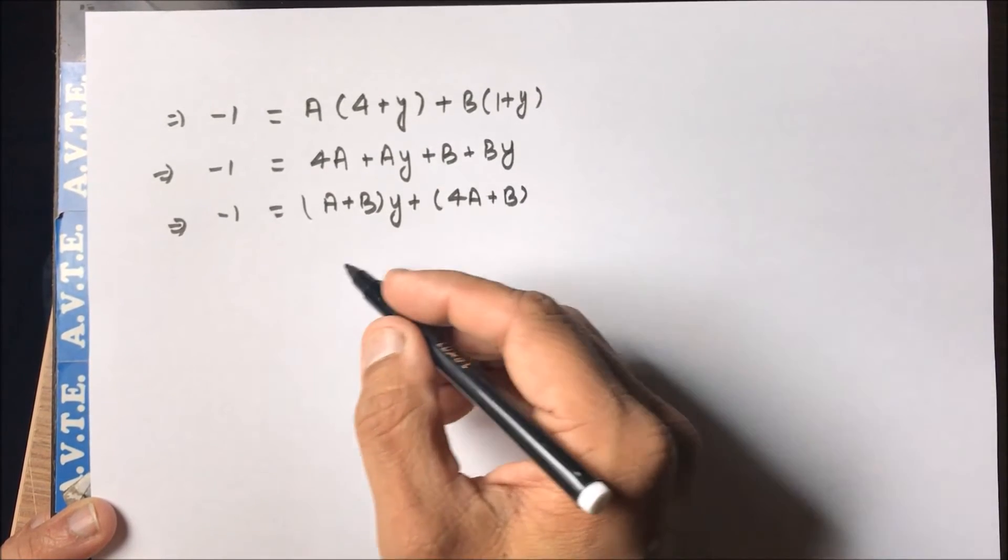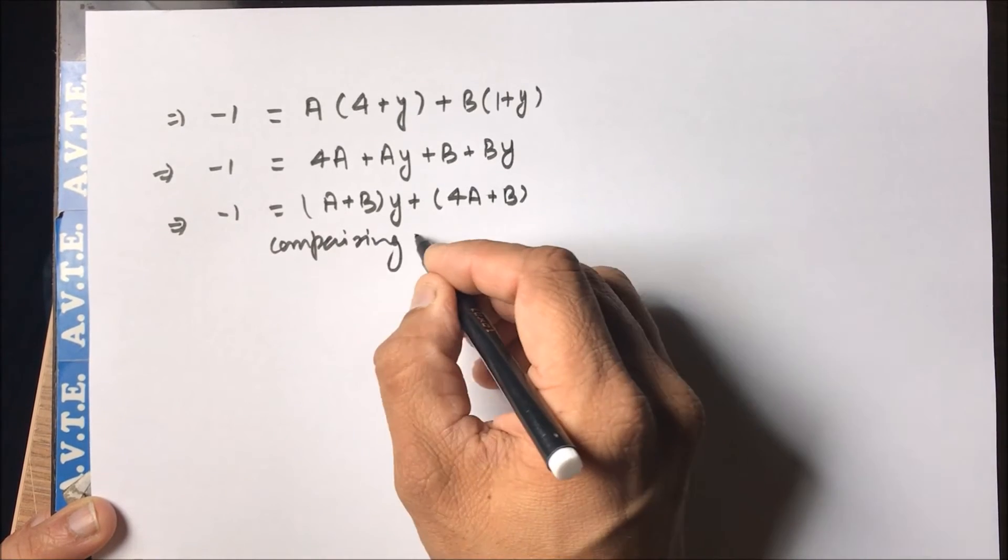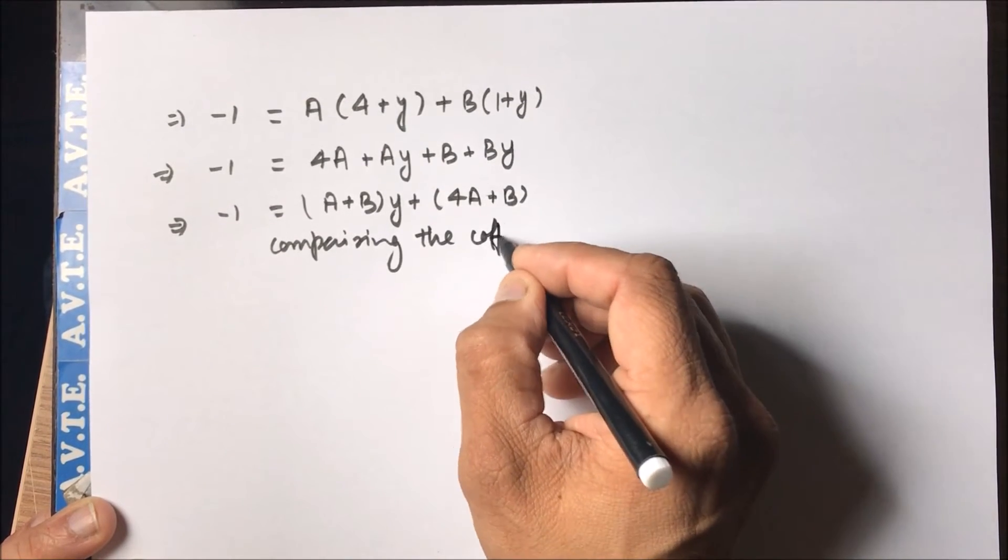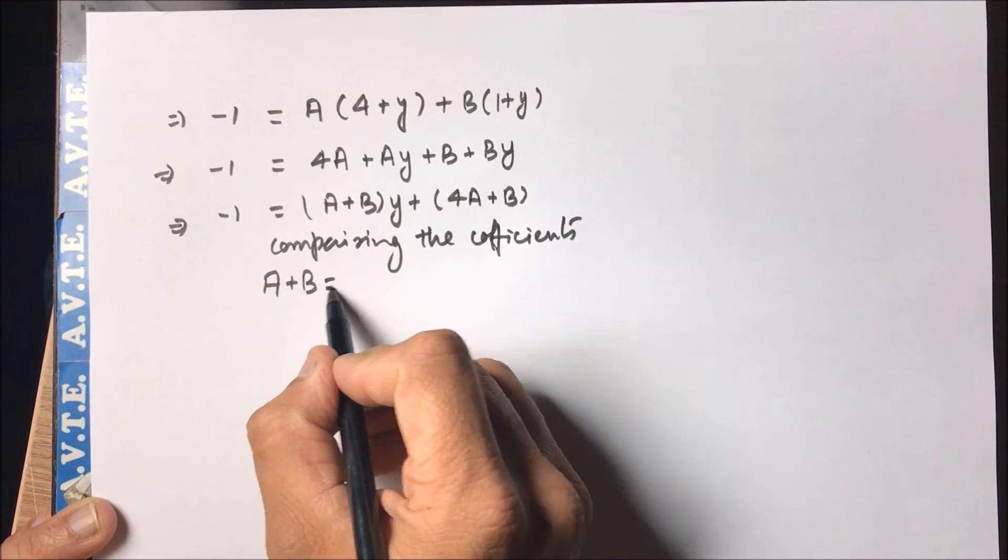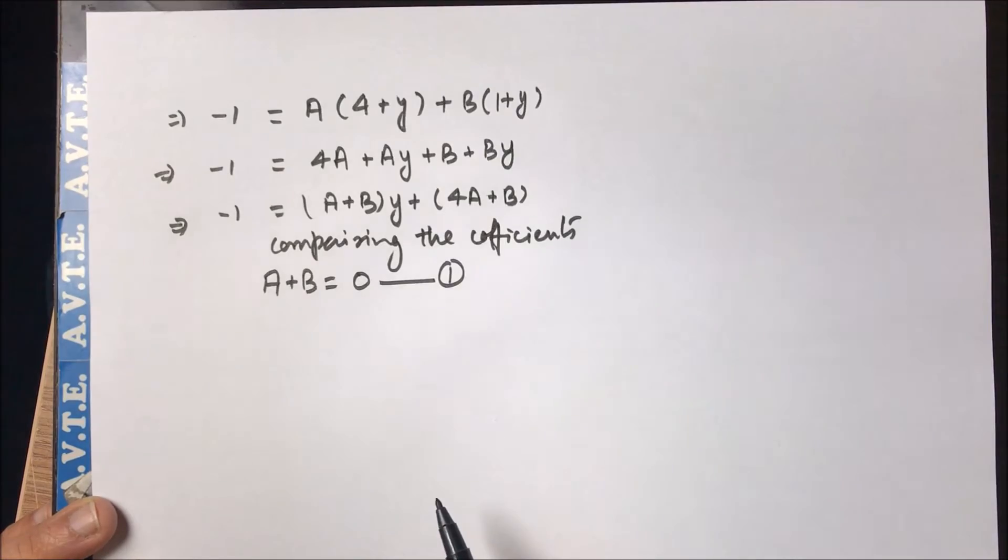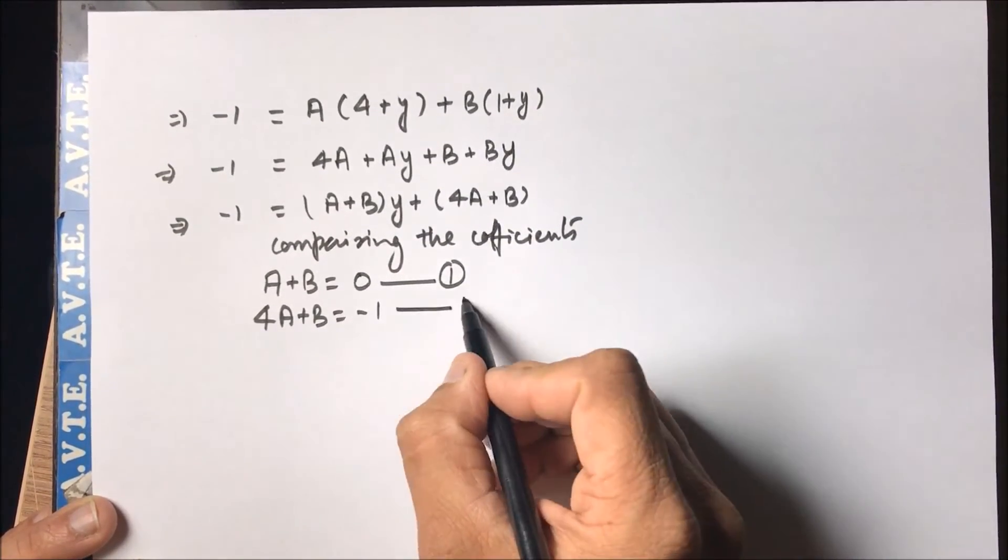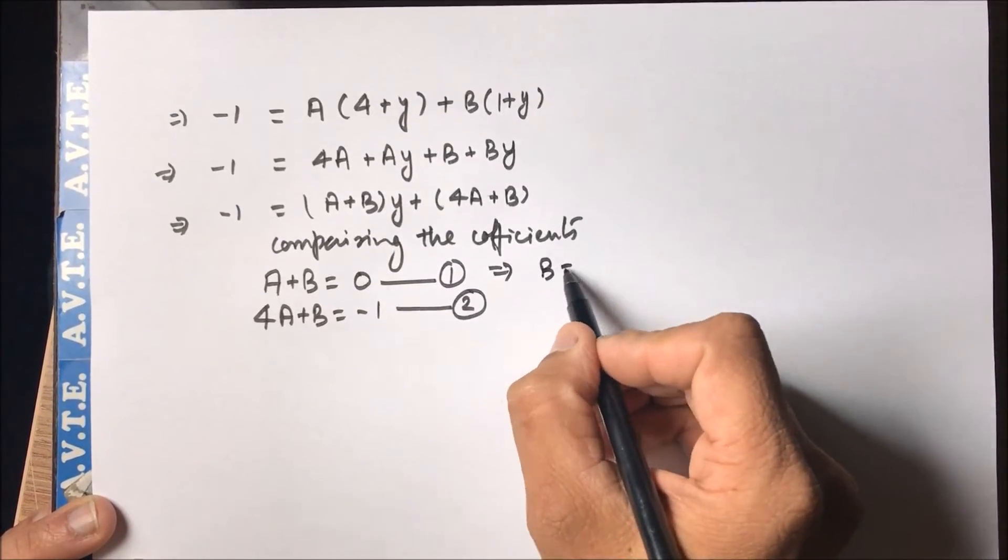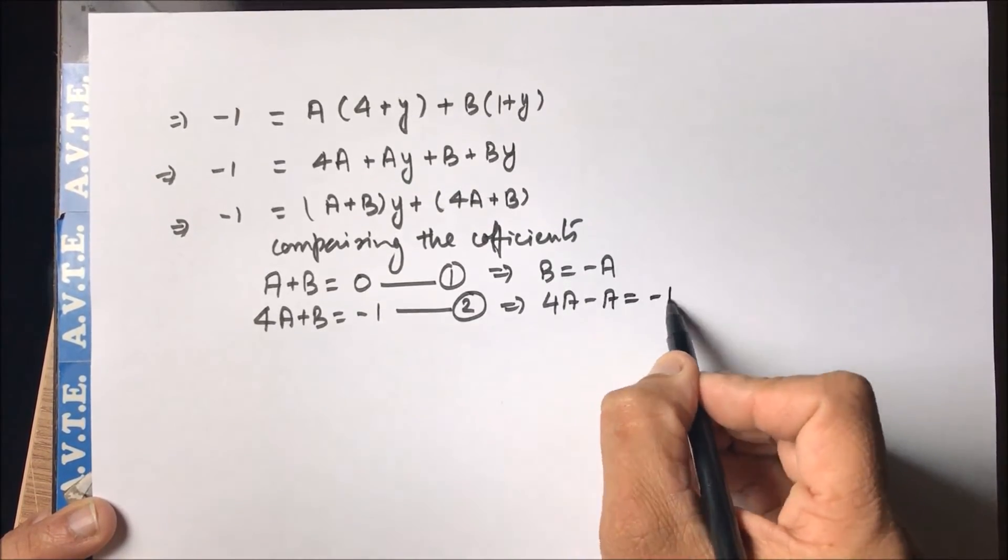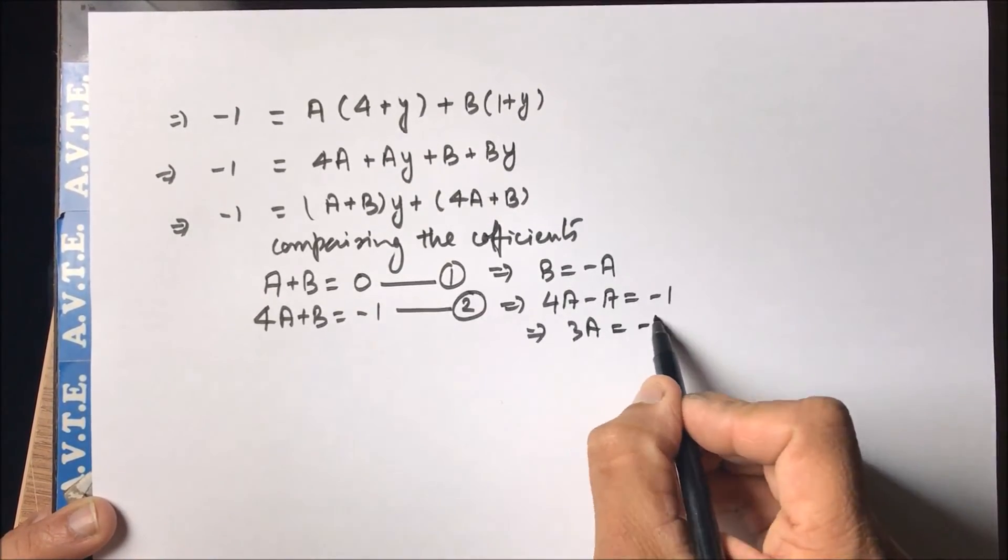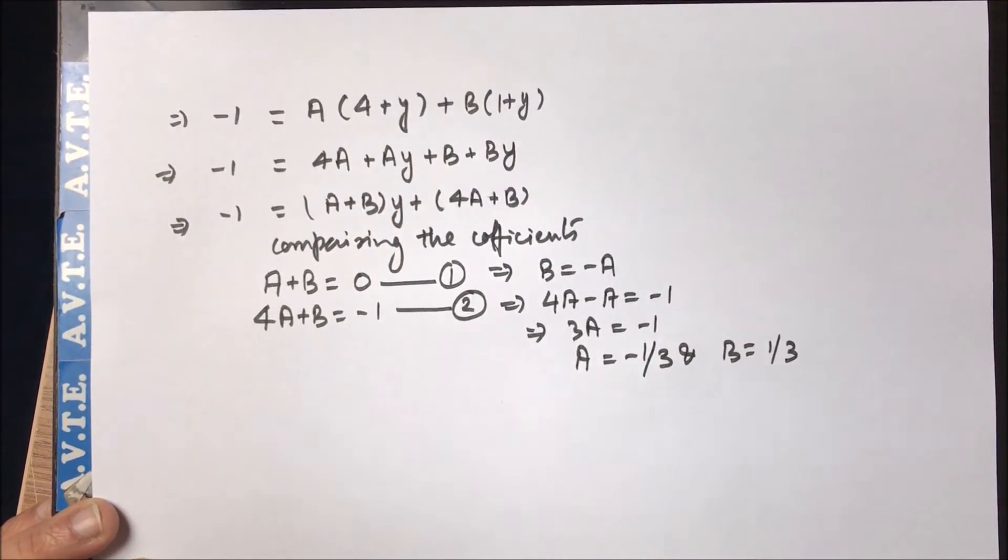And now by comparing the coefficients, we get A plus B is equal to zero because there is no y on the left hand side. But the constant can be compared with minus one. From here B is coming minus A. So we have A and B with us.